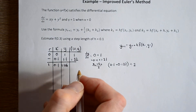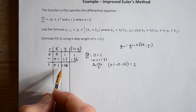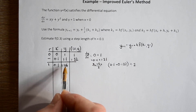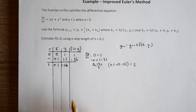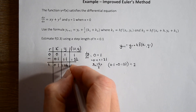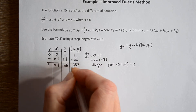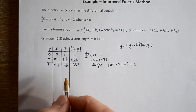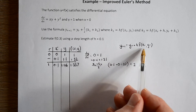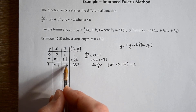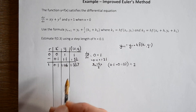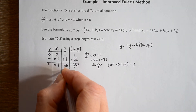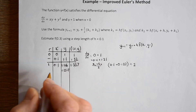We now treat this point as the start of our second step. We want the gradient at this point, so it's x times y plus y squared, and that gives us 1.357. We now want the y ordinate at the end of the second step, so we use Euler's method: it's this value of y plus the step length times the gradient, giving us a value of 1.2517. Then we add on the step length.